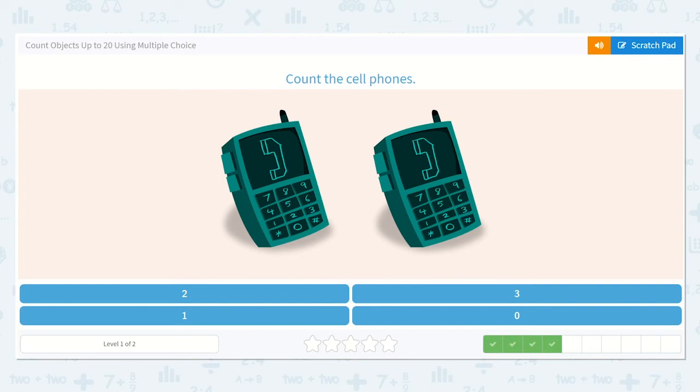Now let's count the cell phones. Again, I don't know that I need to draw a line under those because I can tell how many there are just by looking. I know that there are two cell phones, so I'm going to choose the number two.